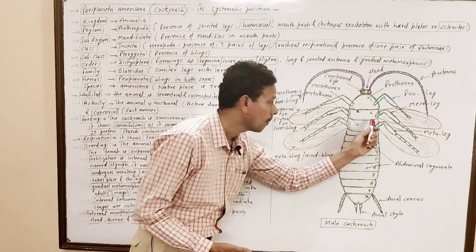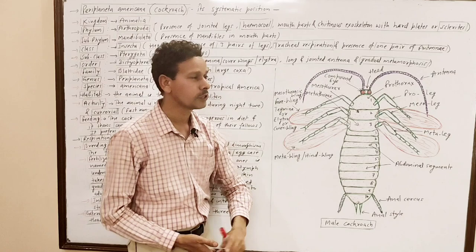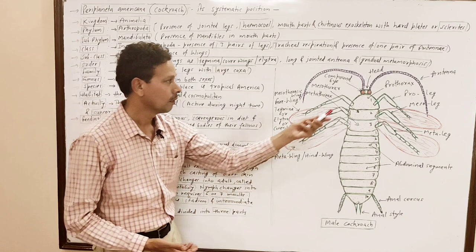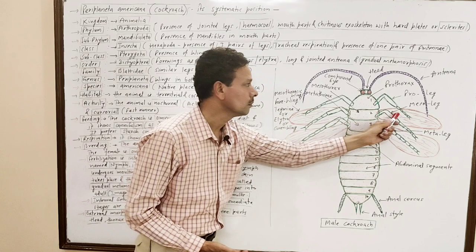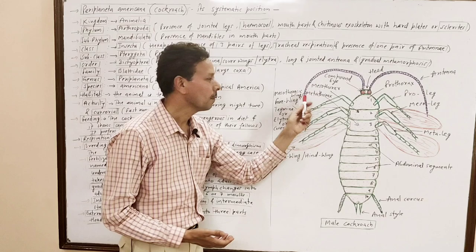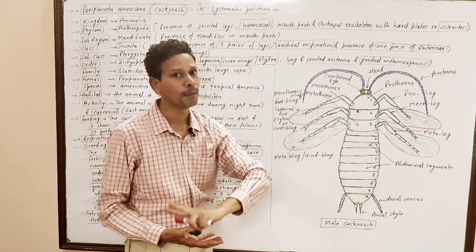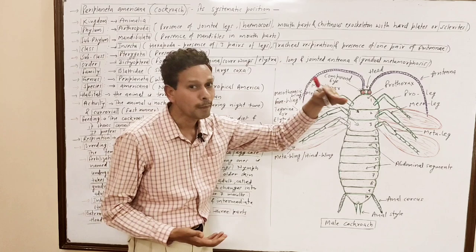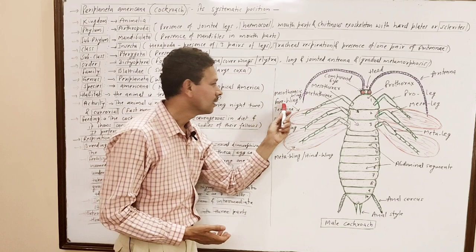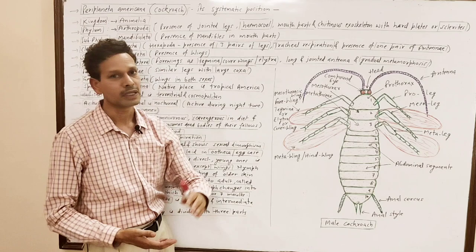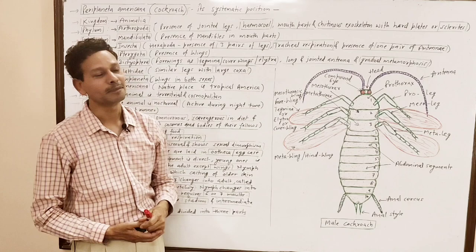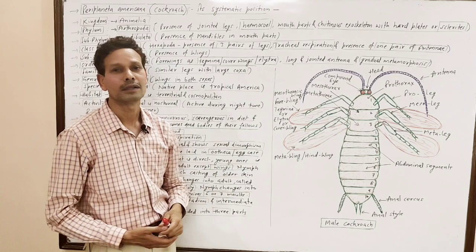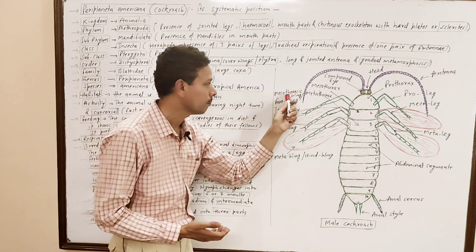In case of cockroach, there are three pairs of legs — one pair on each thoracic segment: prothoracic legs on prothorax, meso legs on mesothorax, and meta legs on metathorax. But there are only two pairs of wings. The first pair of wings are cover wings — these are mesothoracic wings present on the middle part of the thorax — and they are not involved in flight; they are simply protective cover wings named tegmina or elytra.